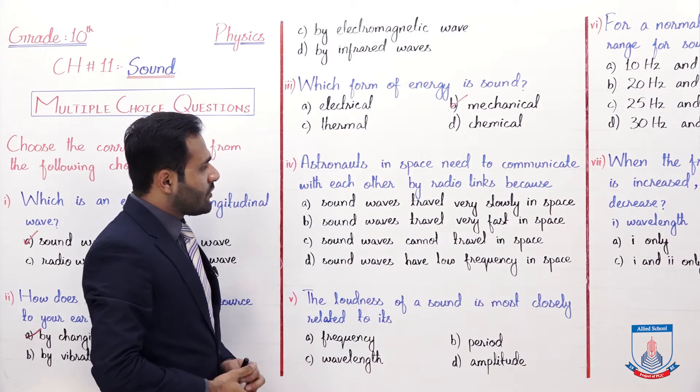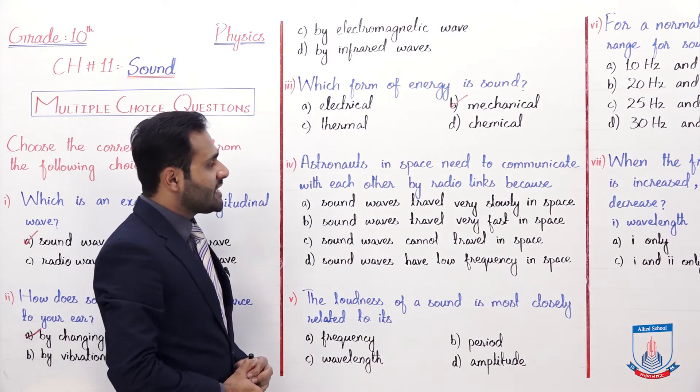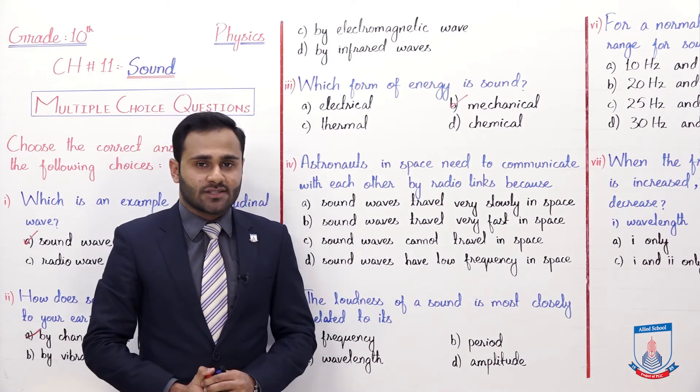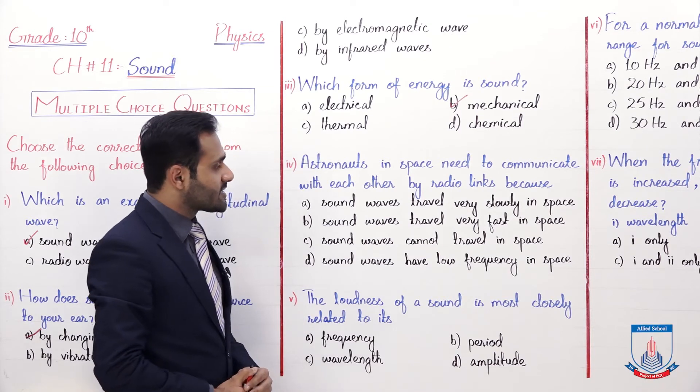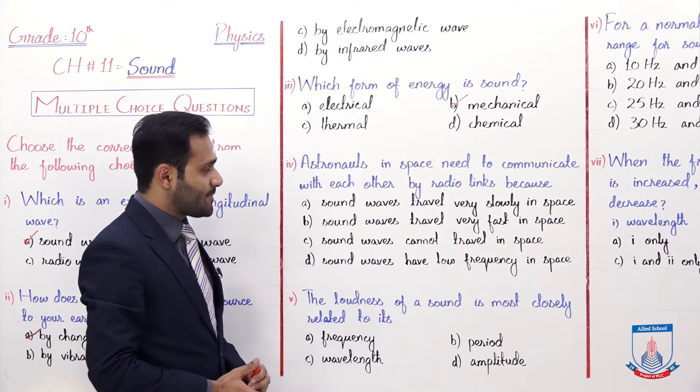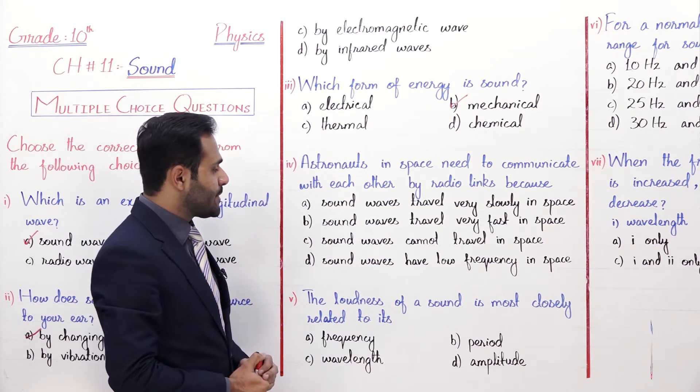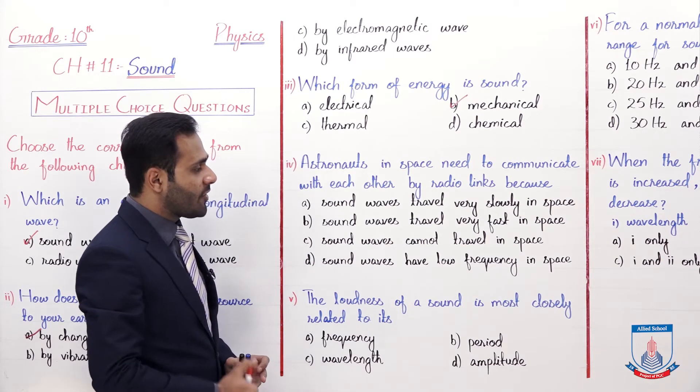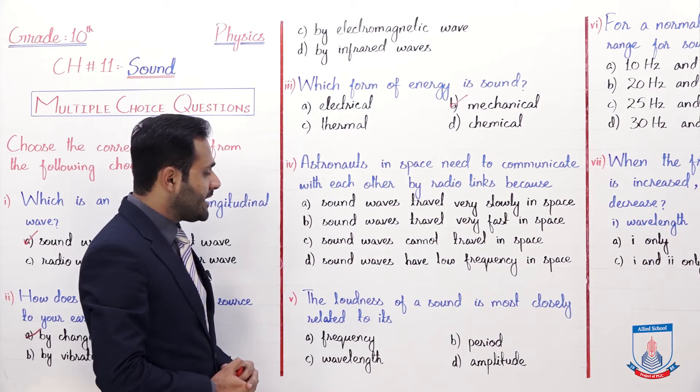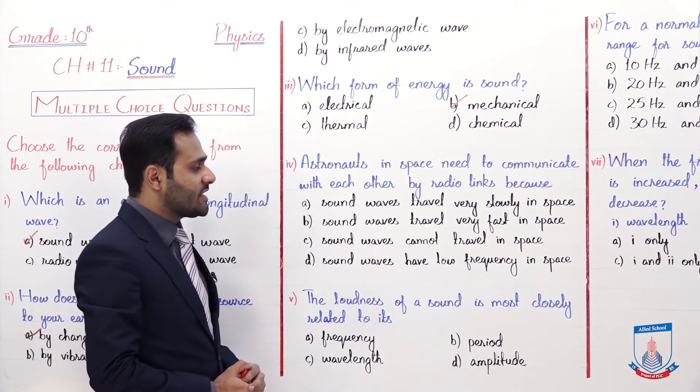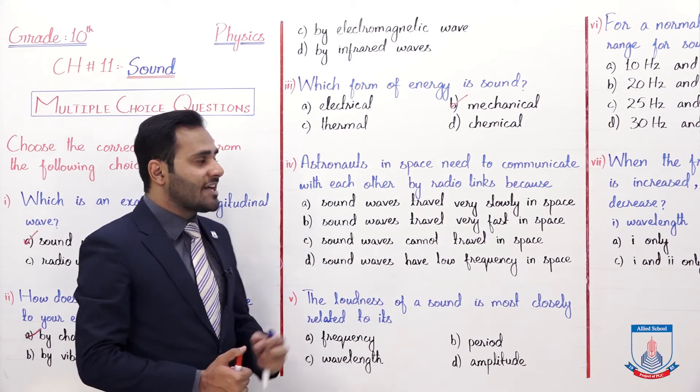And the fourth, astronauts in space need to communicate with each other by radio links because A sound waves travel very slowly in space, B sound waves travel very fast in space, C sound waves cannot travel in space and D sound waves have low frequency in space.